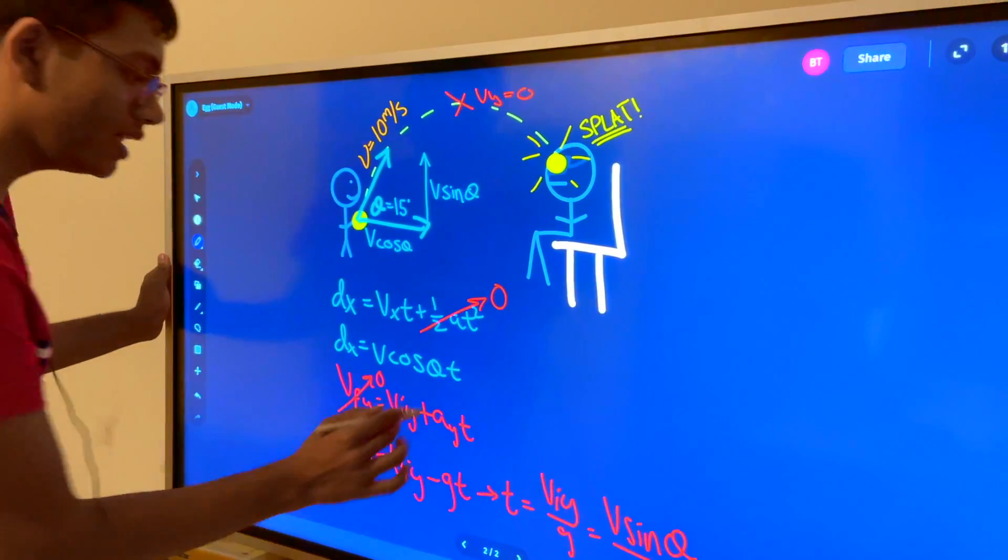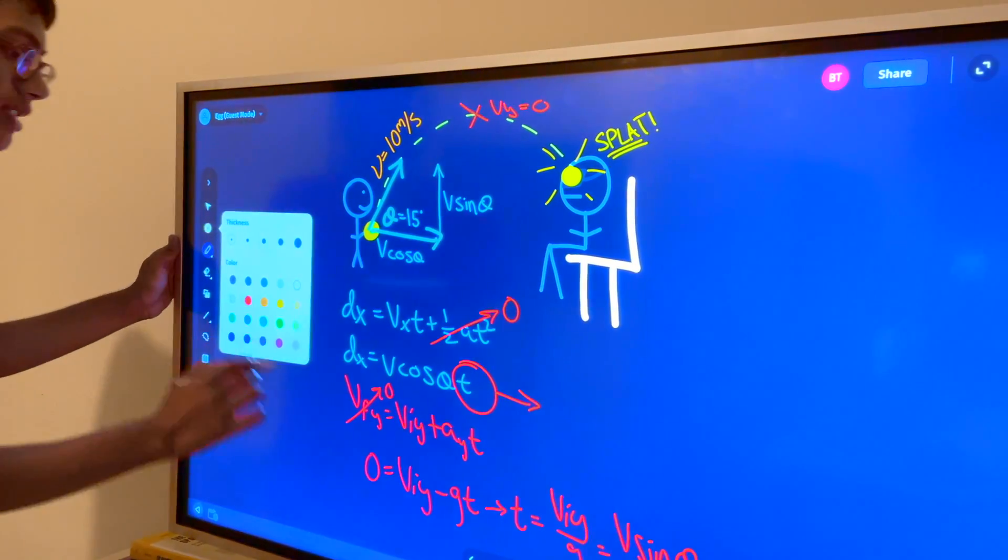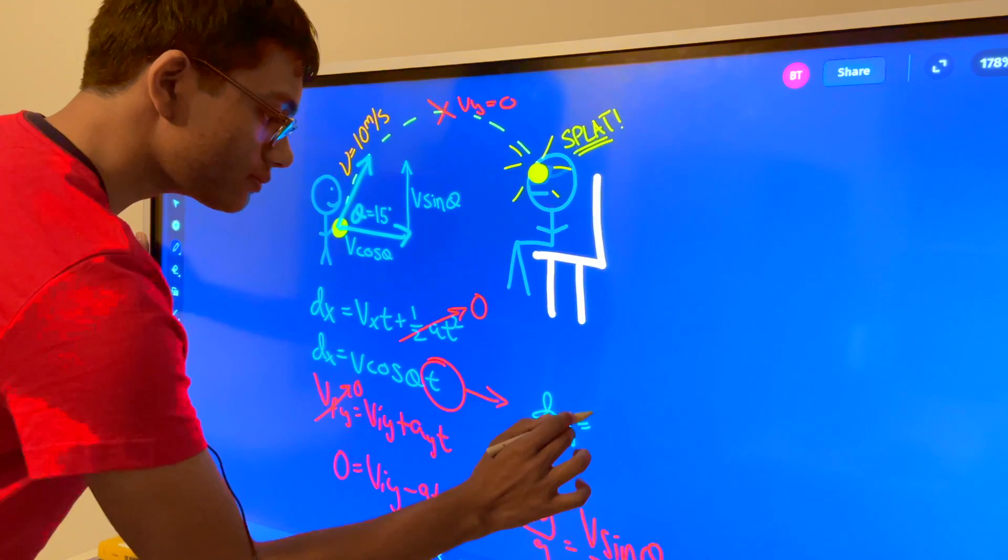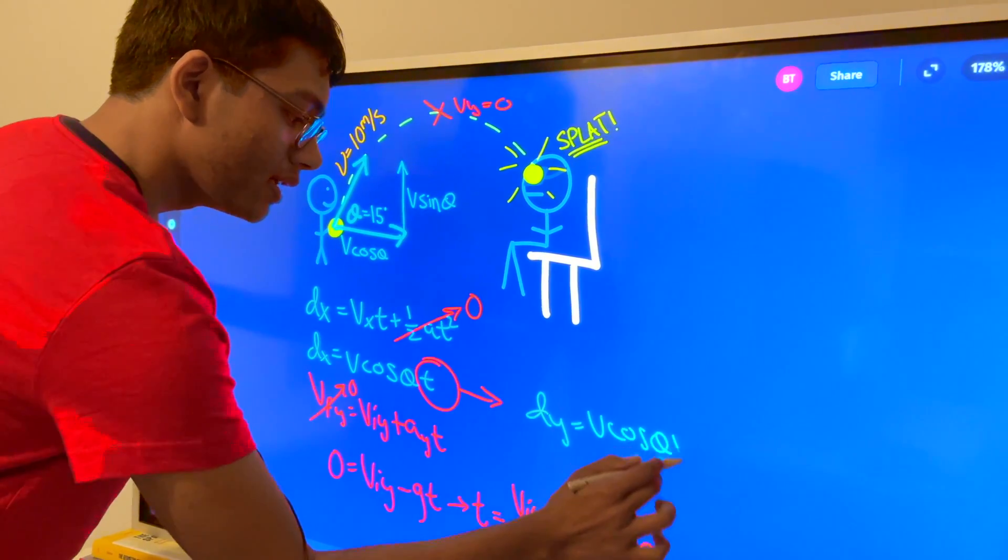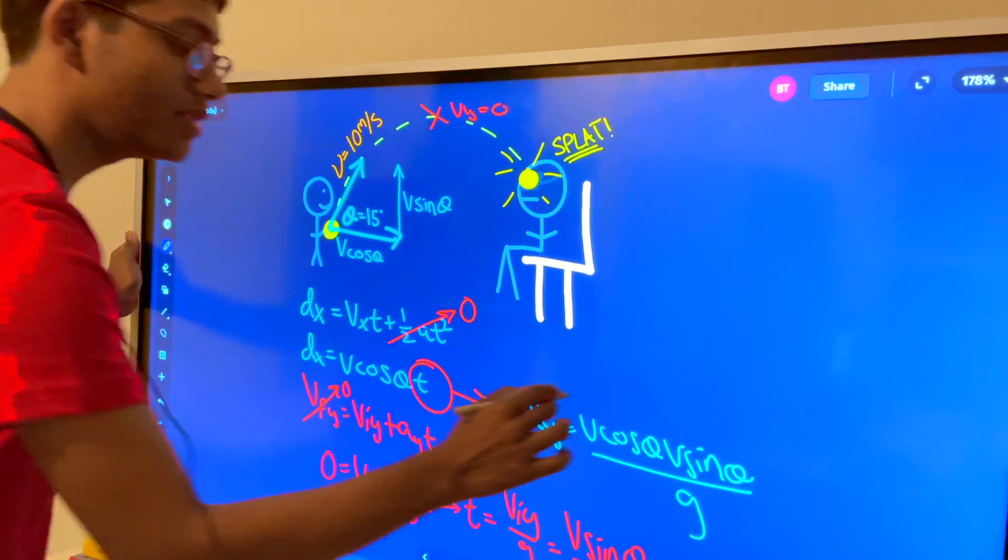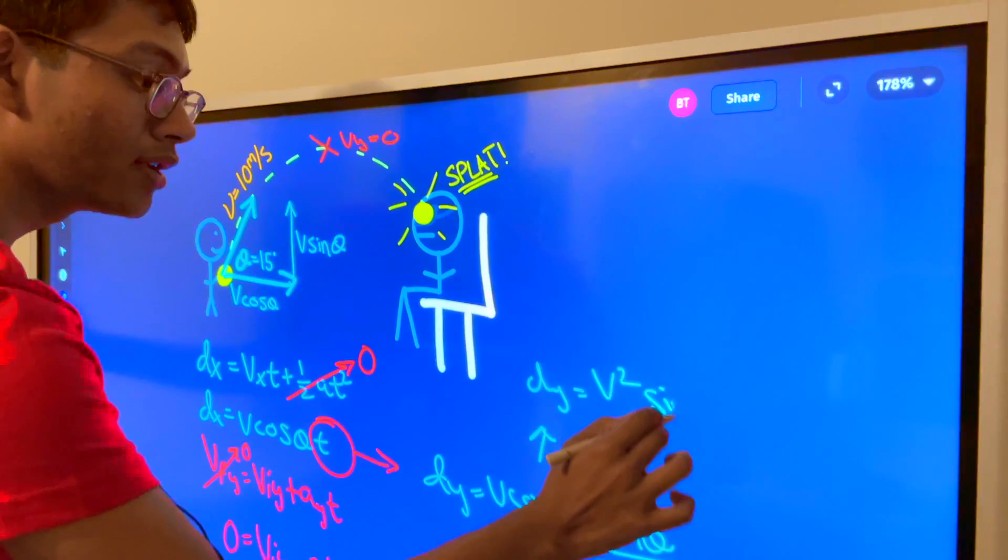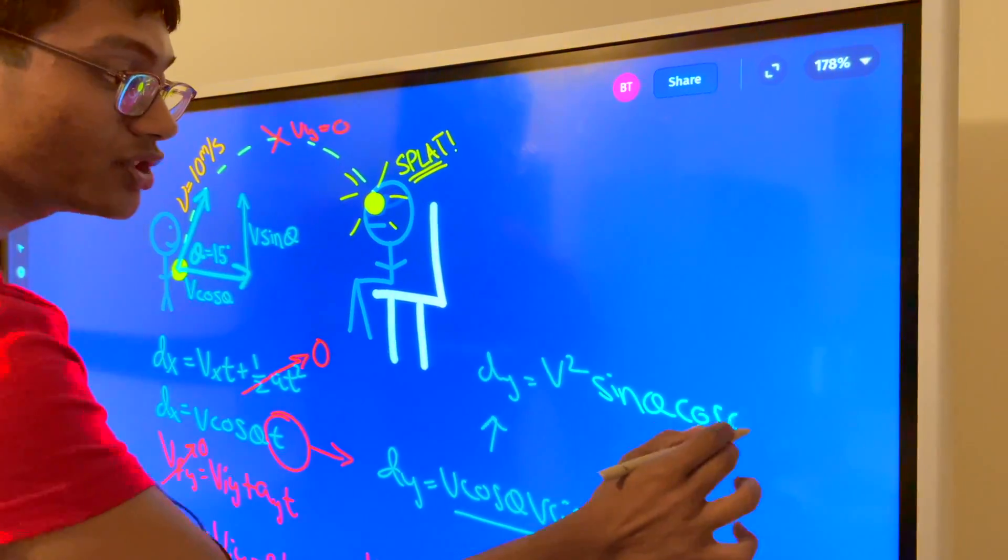Now I'm going to go ahead and plug in this value of t right over here. So let's go ahead and plug that in. I'm going to get d_x is equal to v*cos(θ) times v*sin(θ) times 1 over g. Now I'm going to simplify this formula into d_y is equal to v²*sin(θ)*cos(θ) divided by g.